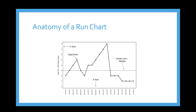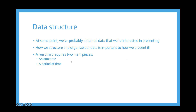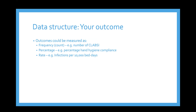If we have data specifically for infection control purposes, we need to think about how we're going to structure our data. For a run chart, we have two main pieces of information: our outcome and a period of time. Outcomes could be measured as frequencies, percentages, or as a rate. Generally, best practice would be to present a percentage or rate, though frequencies are used in some alternative charts.